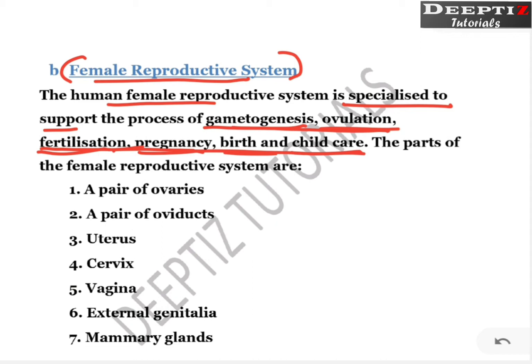In case of the male, we have seen male spermatogenesis or gametogenesis plus the transfer of sperm into the female — that much system forms the male reproductive system. But in case of the female, from gametogenesis or gamete formation all the way to child care — not only childbirth, but also once the child is born, the mammary gland is required to feed with milk. That also comes under the female reproductive system.